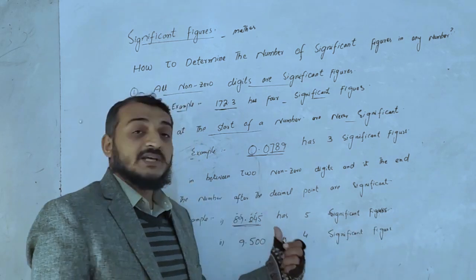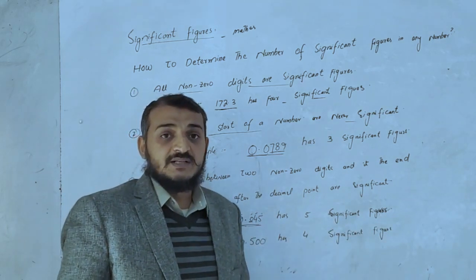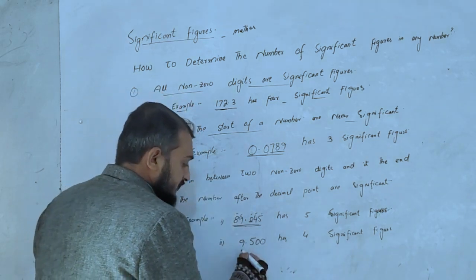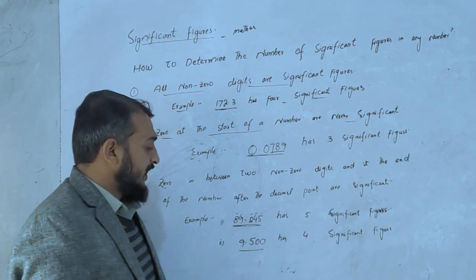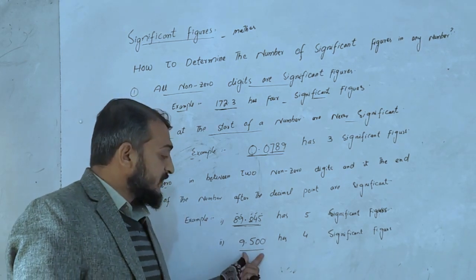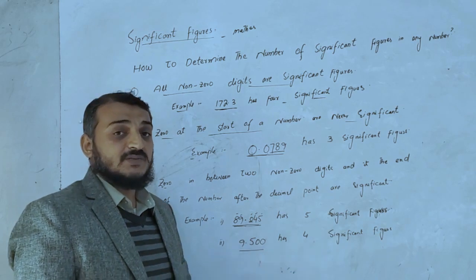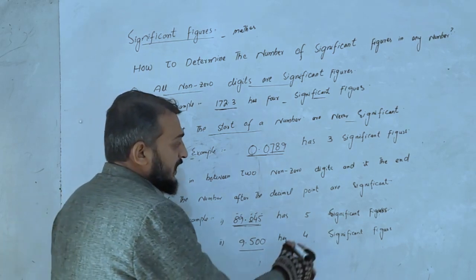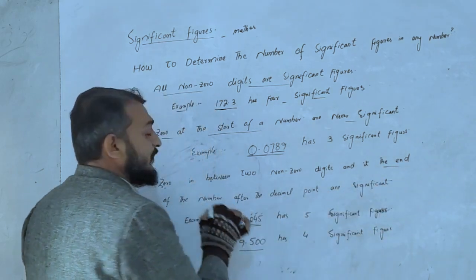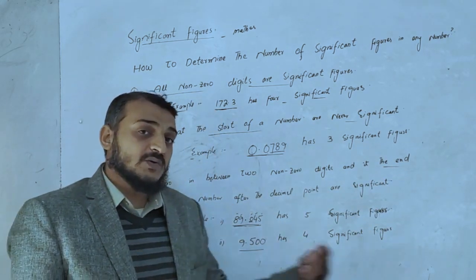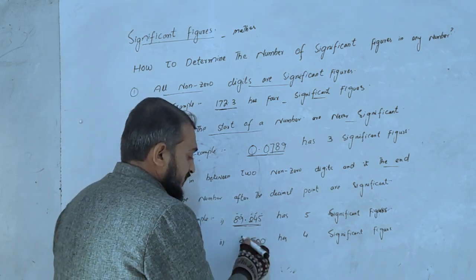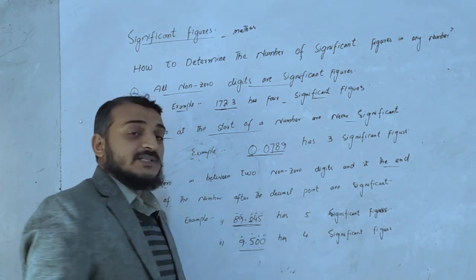Trailing zeros without a decimal point, such as in 9500, are not significant. However, zeros after a decimal point, such as in 0.234, are significant figures.